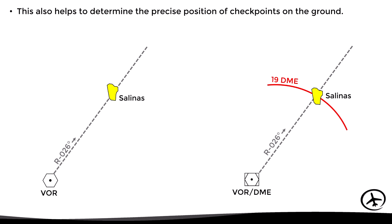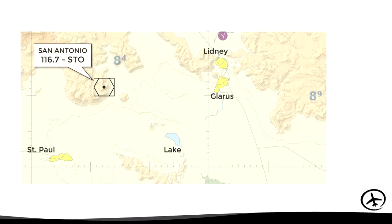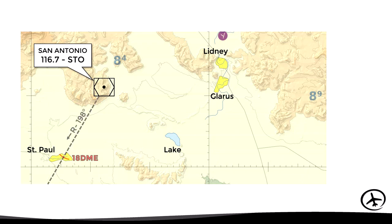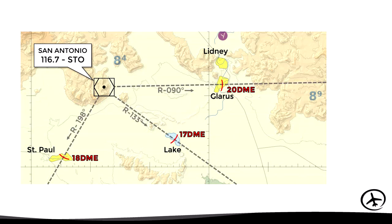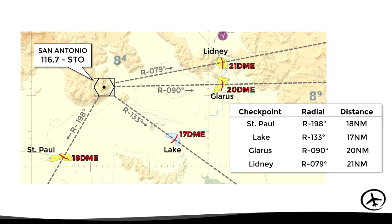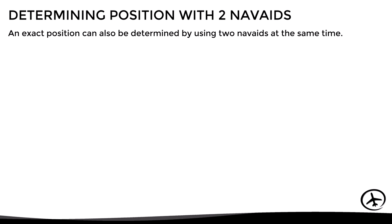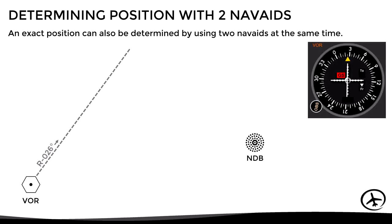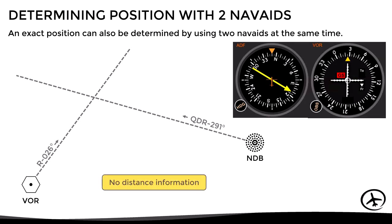With all this in mind, let's look at the following example. Here we have a VOR DME called San Antonio, and there are many visual checkpoints nearby. We could use a chart and a plotter to determine the approximate radial and distance of each checkpoint in relation to San Antonio VOR, and then use that information as reference to assist navigation in a VFR flight. Besides this, there is another way to determine the exact position of an aircraft or checkpoint using two NAVAIDs at the same time. If we determine the radial or QDR from more than one NAVAID, we can figure out the exact position of the aircraft without distance information.